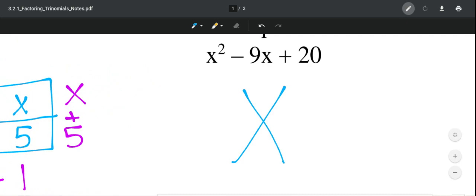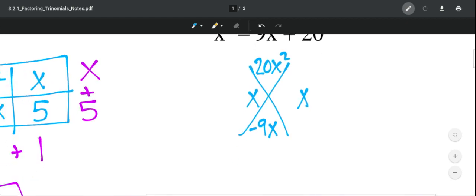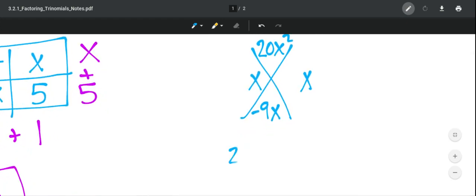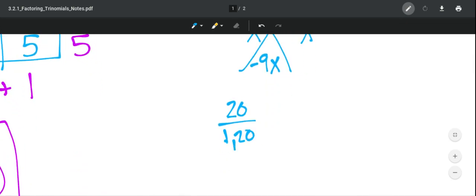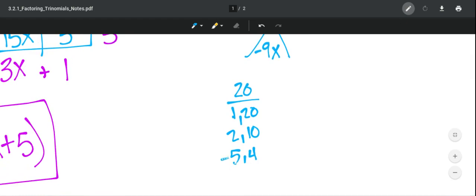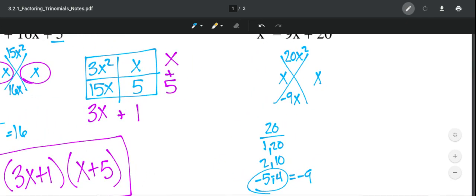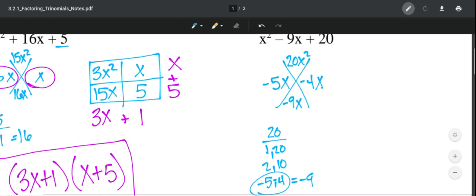So remember, you're going to take the first times the last to get 20x², and the middle term is down at the bottom, negative 9x. So x and x give you x². x plus x gives you some sort of x. So now I need to look at 20, and what multiplies to get you negative 9. So 1 and 20, 2 and 10, 5 and 4. Well, 5 and 4 give me positive 9, so to get negative, I just make them both negative. So, negative 5, negative 4. Multiply to a positive, add to negative 9.